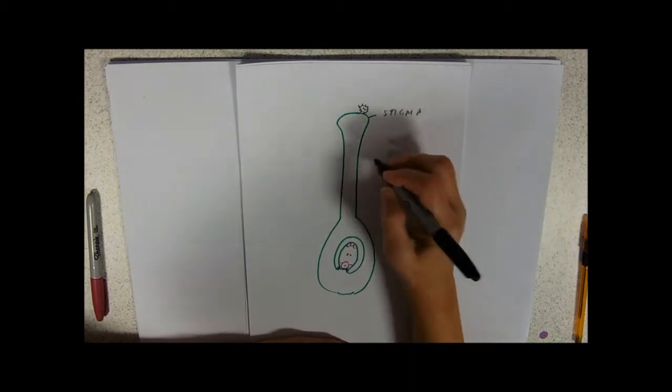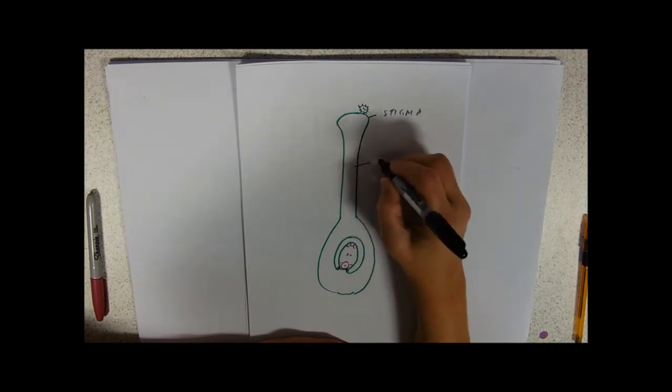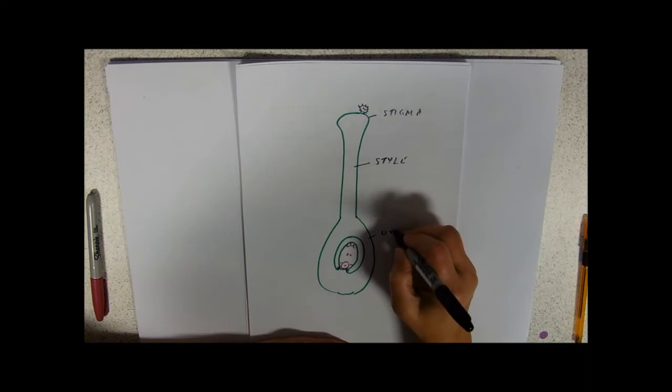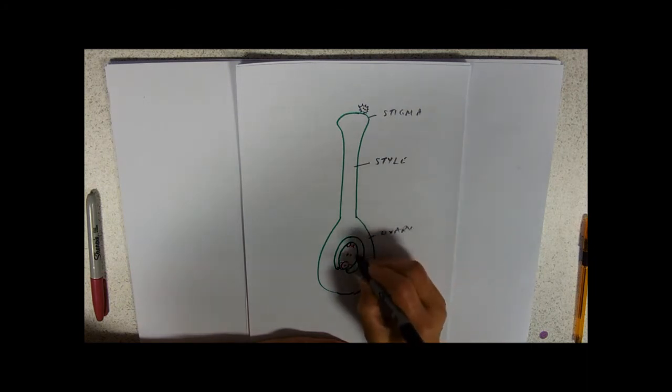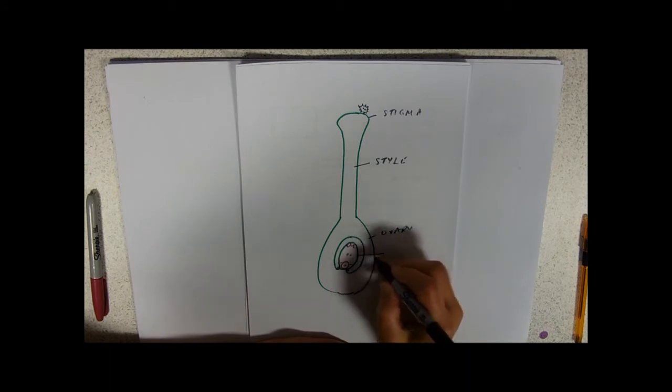Hopefully this will be on a different plant. You've got the style, the ovary, and inside the ovary you've got the ovule which is the embryo sac plus integuments.